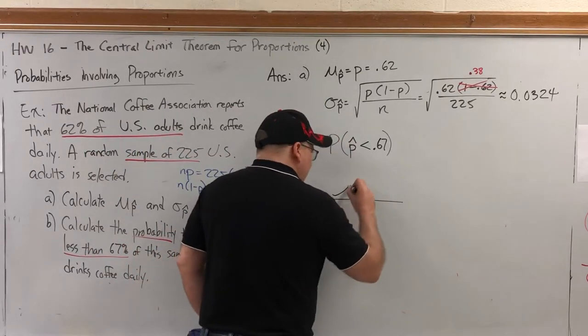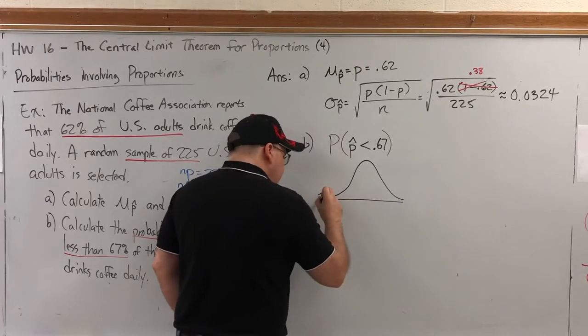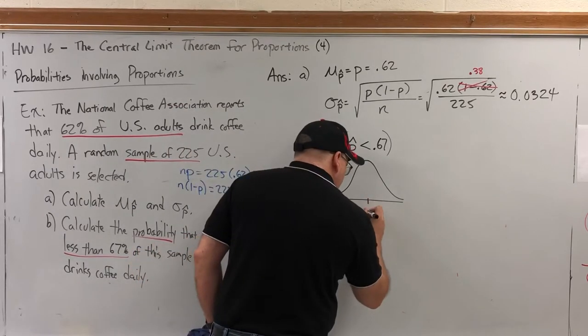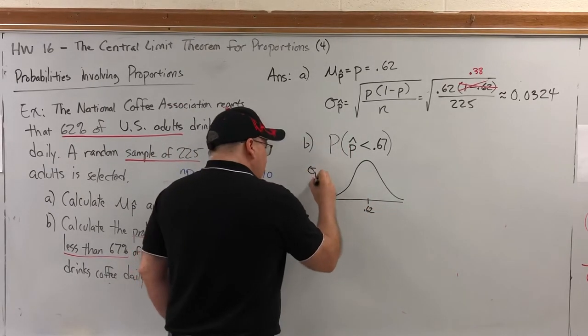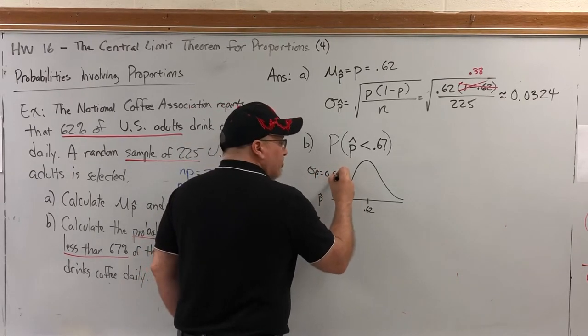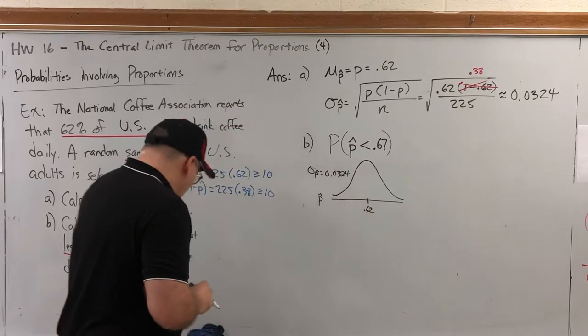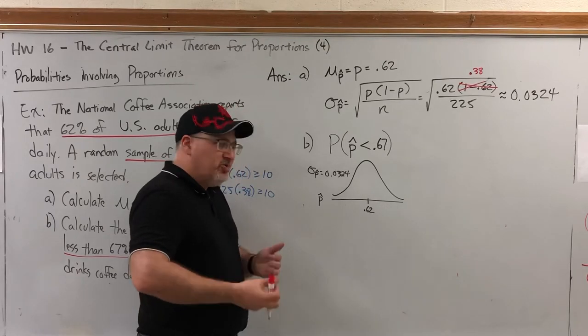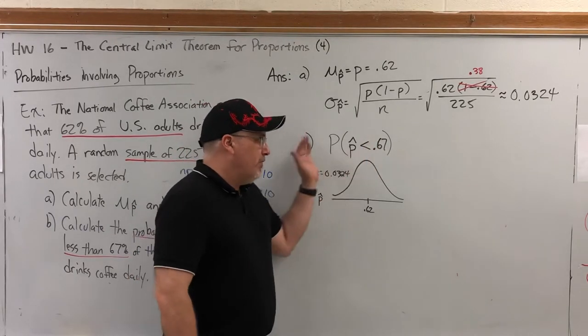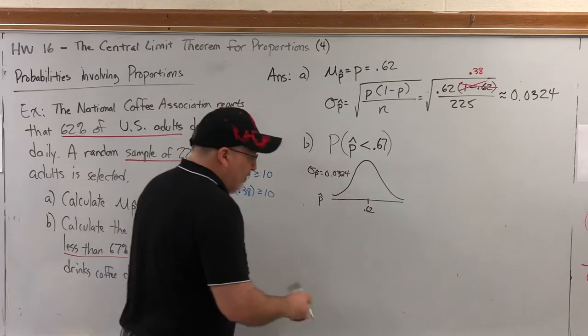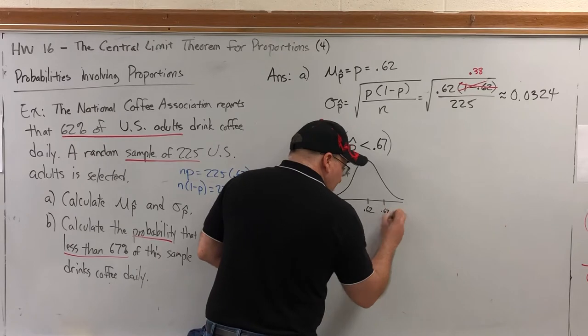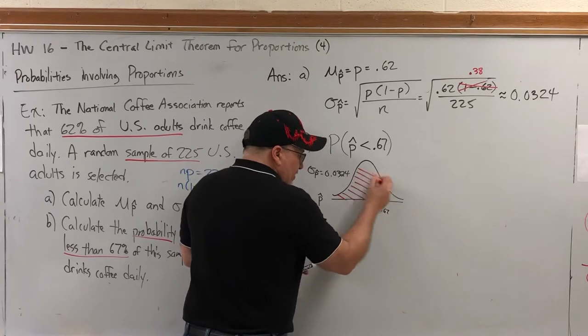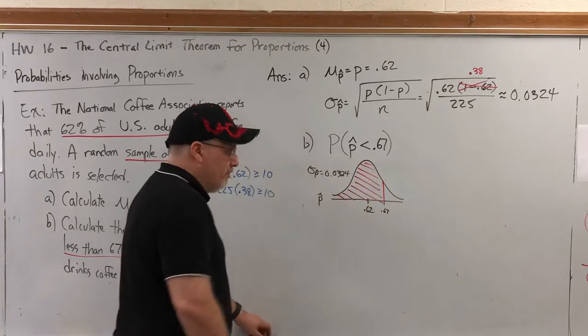Now I could draw the bell curve for this right now for my P-hats, because I know what their mean is. Their mean is 0.62, that's what we put in the middle. And the standard deviation, which I'm just going to list, was 0.0324. What would the picture look like for this probability? Well, remember, that probability corresponds to area under this curve. And if it's a probability of being less than something, then it's the probability of being to the left of under this curve. So if we can find this area, the area to the left of 0.67 in this bell curve, then we have our answer.